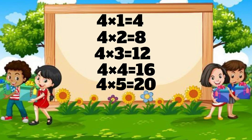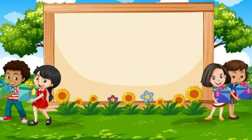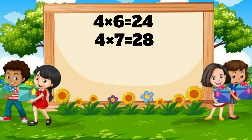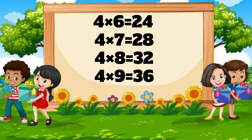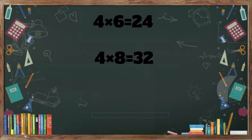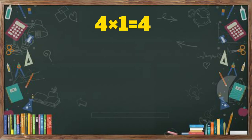Four five's a twenty. Four six's a twenty-four. Four seven's a twenty-eight. Four eight's a thirty-two. Four nine's a thirty-six. Four tens are forty.